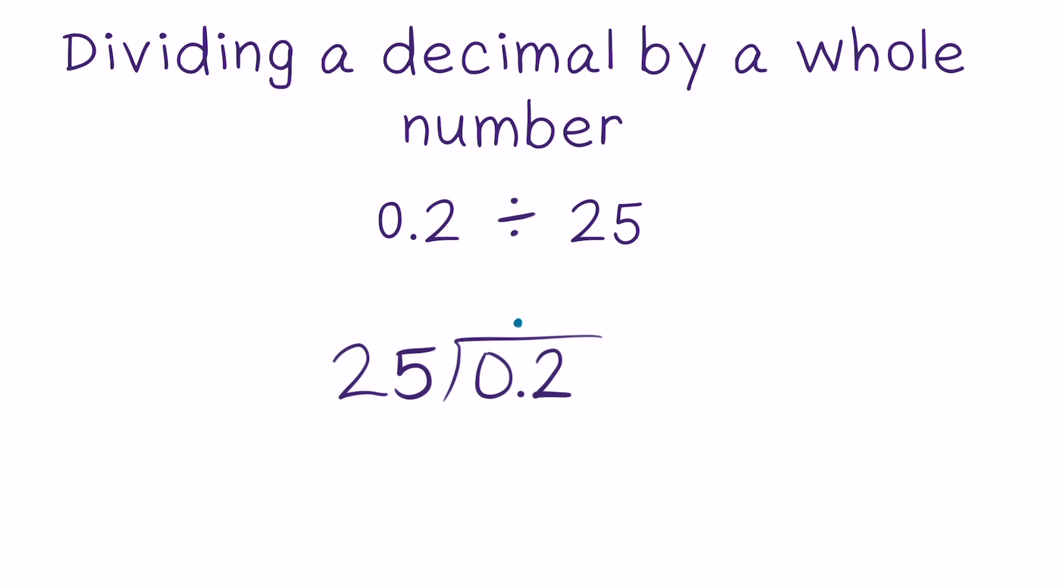In dividing 0.2 by 25, I begin by asking myself how many times does my divisor of 25 go into the dividend. Beginning with my first digit, 25 goes into 0 zero times. Zero times 25 is zero, which allows me to bring down my digit of 2. Now I have to figure out how many times 25 goes into 2, and that is going to be zero times—25 doesn't go into 2. Now I've used up all of the digits in my dividend and 25 has not been able to go into any of them.